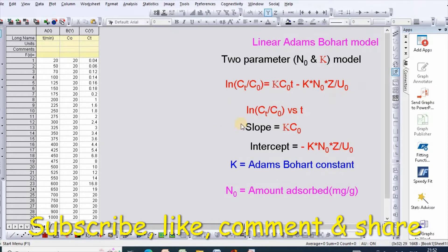From this equation, a plot of ln(Ct/C0) versus t will give you slope equal to kC0 and intercept equal to minus kN0z divided by U0. Where k is the Adam's Bohart constant and N0 is the amount adsorbed.